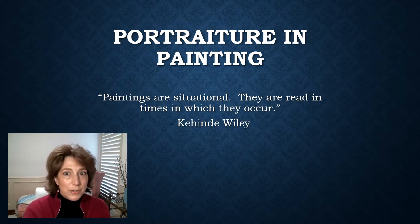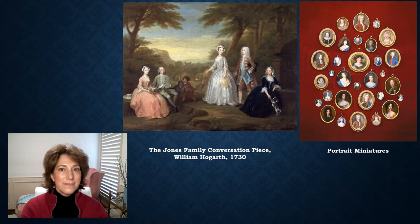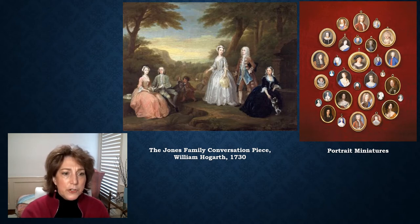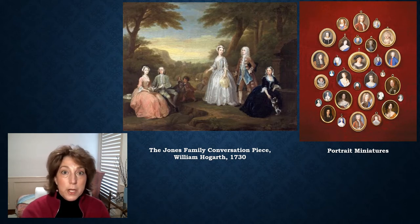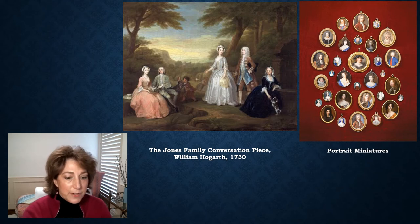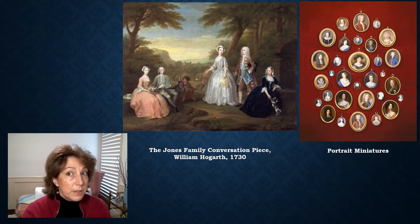Here we have two examples of early portraiture. On the left we have the Jones Family Conversation Piece, painted by William Hogarth in 1730. A 'conversation piece' was the art term for a painting where several people interact, popularized by British painter Joshua Reynolds. This piece was commissioned by Robert Jones, a sheriff in Scotland, who would have had good standing and wealth in the community.